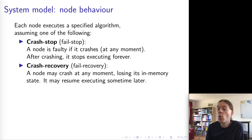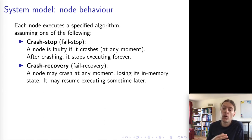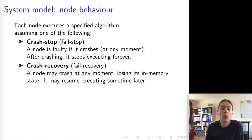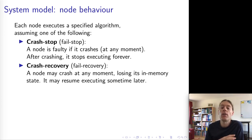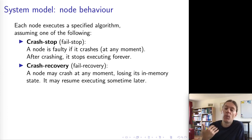In other systems, we might want to assume that nodes might crash and then come back again — they might recover after some period of time. When a node crashes, any in-memory state is lost. Any state not written to disk or non-volatile storage will be lost. But data stored in stable storage can survive the crash and will still be there after the node recovers. In a crash recovery model, nodes might still crash and never come back — we're just adding the additional possibility that a node might recover.